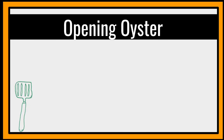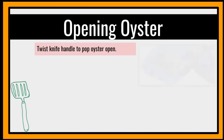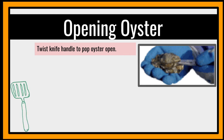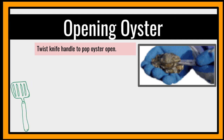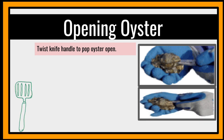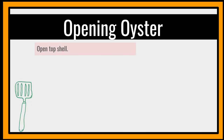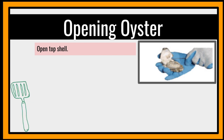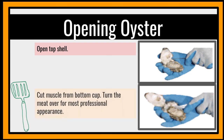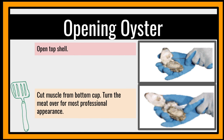How about for the oyster? First, point the tip of your knife on the oyster. Then twist the knife handle to pop the oyster open. Then push the knife into the oyster and slice the mussels from the top shell. Be careful in handling it. When you're going to open the top shell, this requires a lot of pressure from your hand. The last step is to cut the mussel from the bottom cup and turn the meat over for the most professional appearance.